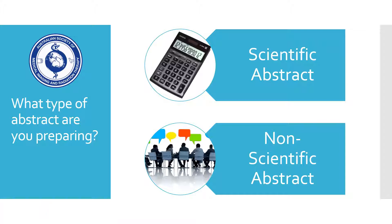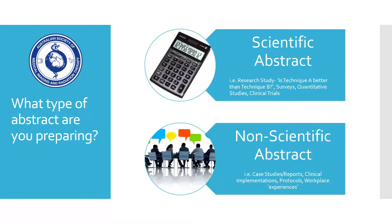After reading through the format guidelines, it's important to consider what type of abstract you are preparing. In general, there are two types: scientific and non-scientific. Scientific abstracts include research studies such as comparing technique A versus technique B, surveys, quantitative studies with measurable outputs, and clinical trials.